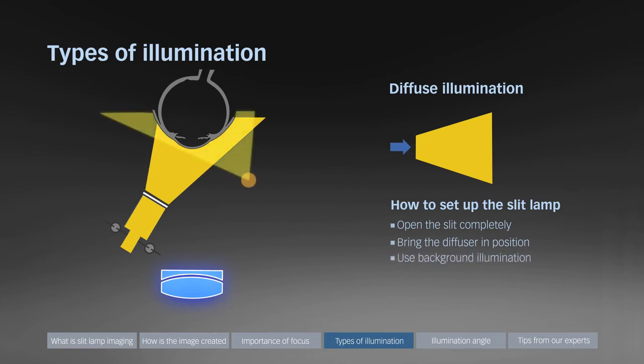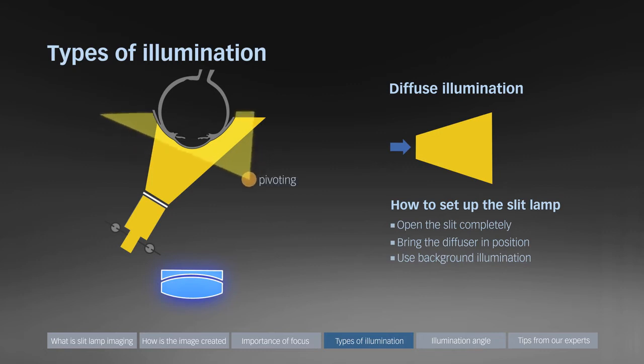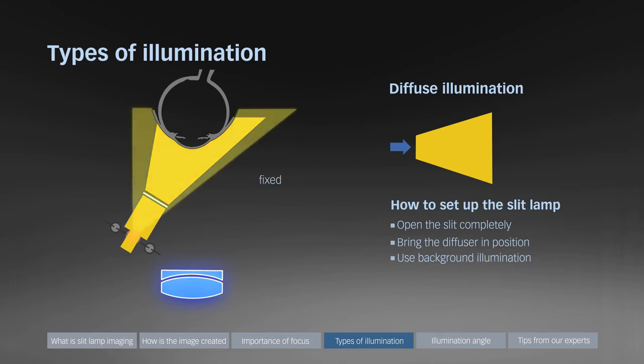Haag-Streit offers two versions of background illumination: a pivoting version that allows for optimal positioning, and a fixed version that is attached to the same axis as the mirror.